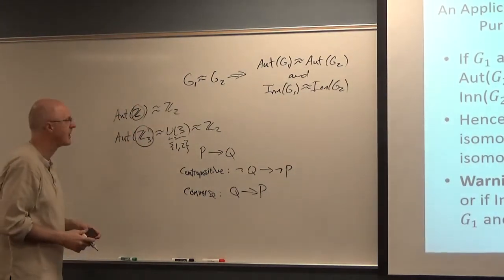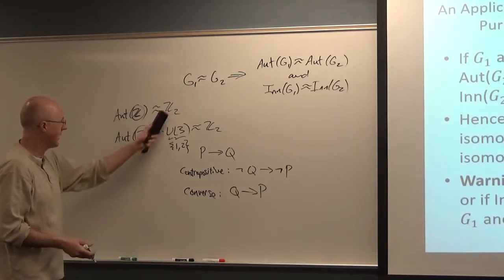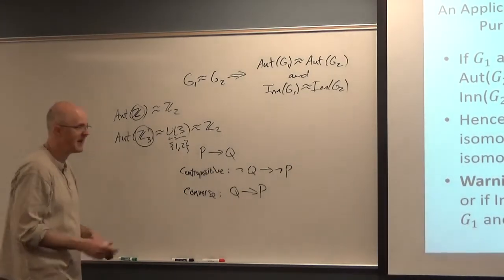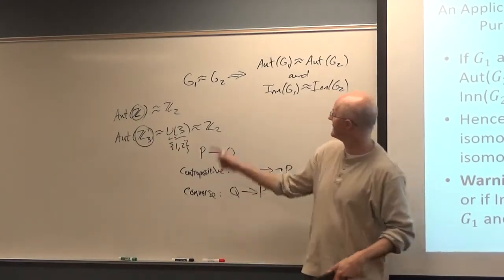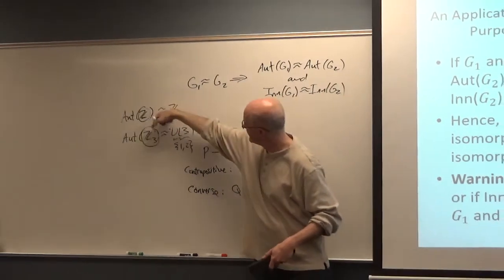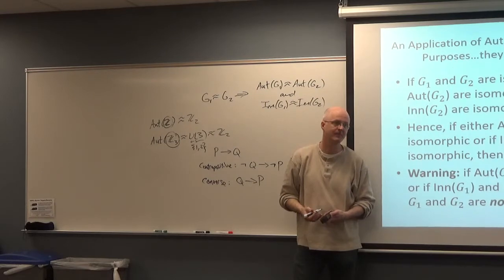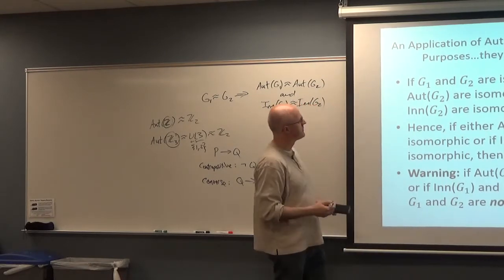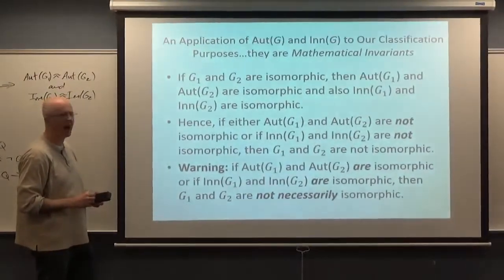In fact, it's isomorphic to Z2. Another example of a group whose group of automorphisms is isomorphic to Z2 would be, for example, Z3. Its group of automorphisms is isomorphic to U(3), which is isomorphic to Z2. So here you have two non-isomorphic groups, Z and Z3, whose corresponding group of automorphisms are isomorphic. But again, that fits the warning case. Just because these are isomorphic, Z2 is isomorphic to Z2, does not mean that these are the same.